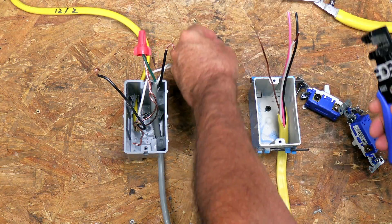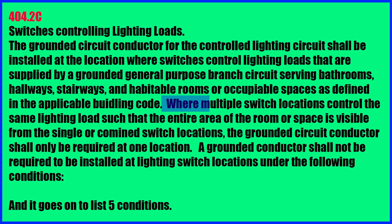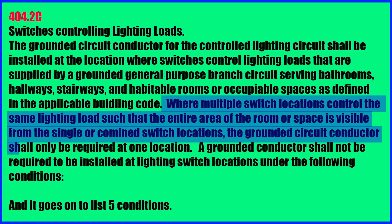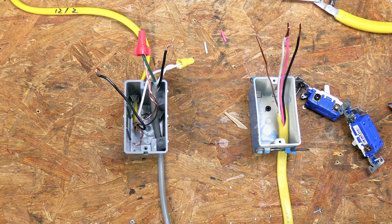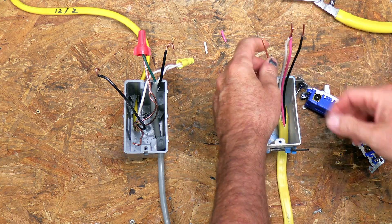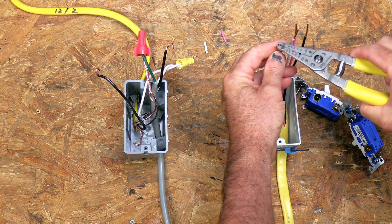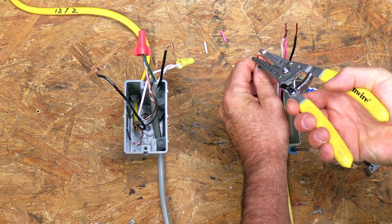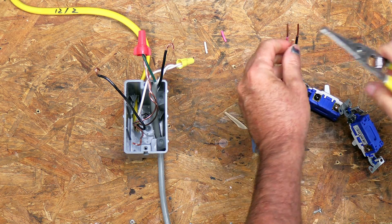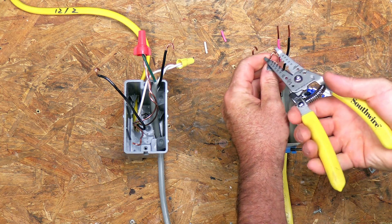Now you might be thinking, there is a code that says you have to have a neutral at every switch location or at most switch locations. But in this case, as long as you can see the switch, like if you can see the second switch from the first switch, both switches are visible, actually code 404.2C, I believe it is, you don't need a neutral in the secondary location as long as the primary location has the neutral, so keep that in mind as well.